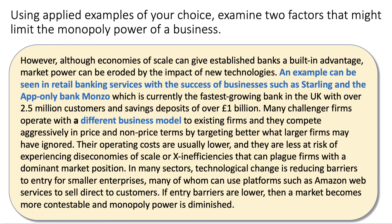However, for the evaluation point: although economies of scale can give established banks a built-in advantage, market power can be eroded by the impact of new technology. An example can be seen in retail banking with the success of businesses such as Starling, and one particularly interesting for teenage economists, the app-only bank Monzo — the fastest-growing bank in the UK, with over two and a half million customers and aiming to reach over three and a half million within the next year or so.